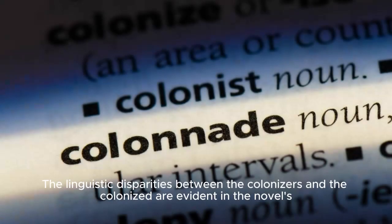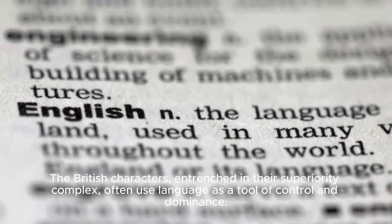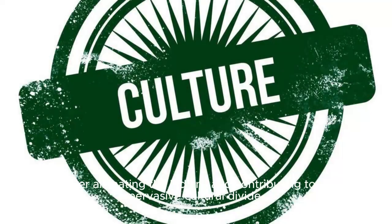The linguistic disparities between the colonizers and the colonized are evident in the novel's portrayal of English as the language of power and authority. The British characters, entrenched in their superiority complex, often use language as a tool of control and dominance. This linguistic hierarchy reinforces the existing power dynamics, further alienating the Indians and contributing to the pervasive cultural divide.